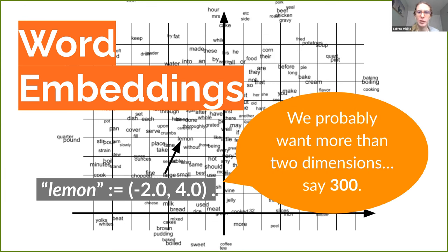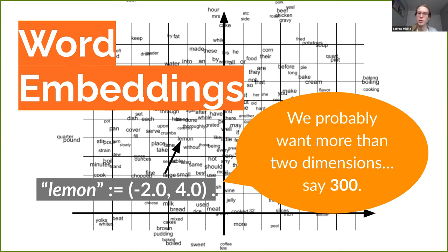Take the word 'lemon' - it sits at minus two and four, so its word embedding, its numerical representation, is the two-dimensional vector with minus two and four. Similar words will end up with similar embeddings, close to each other numerically. In practice, we're not going to use two dimensions - we might use something like 300 dimensions. We can imagine 2D and 3D, maybe 4D, but 300 dimensions - the math works out and that's all that matters. For this slide deck we'll be doing two-dimensional word embeddings.